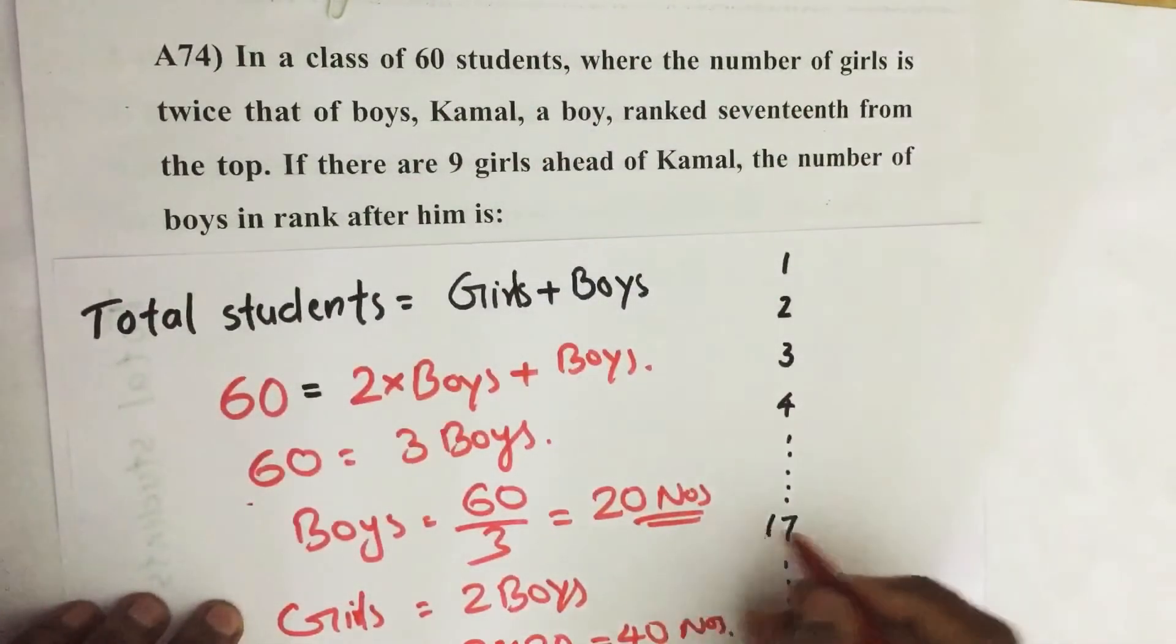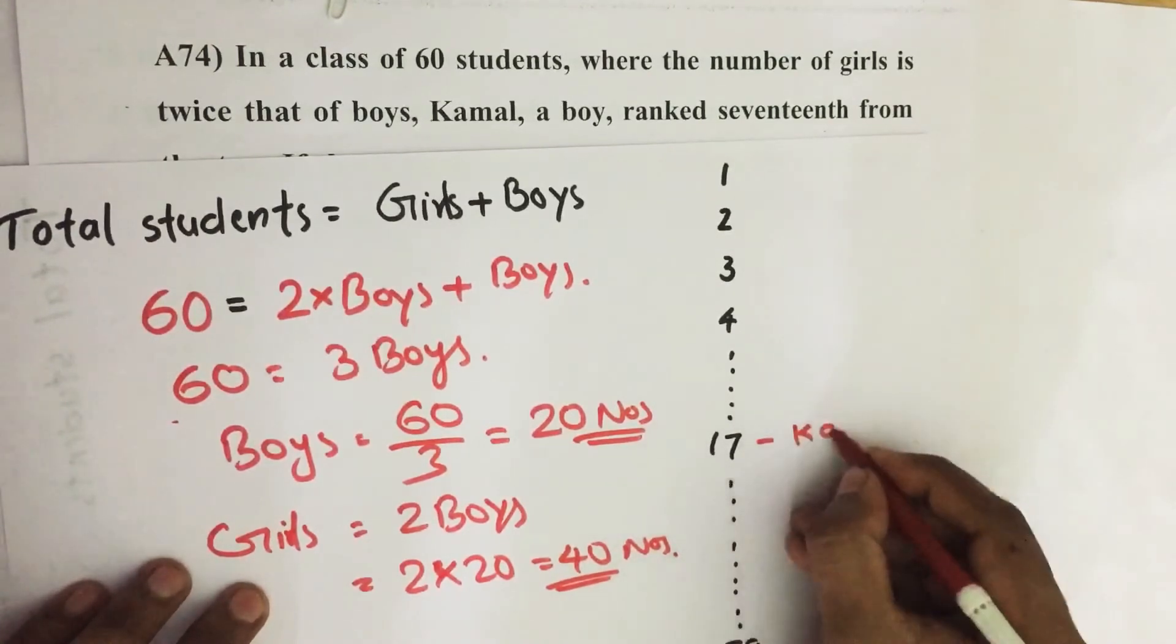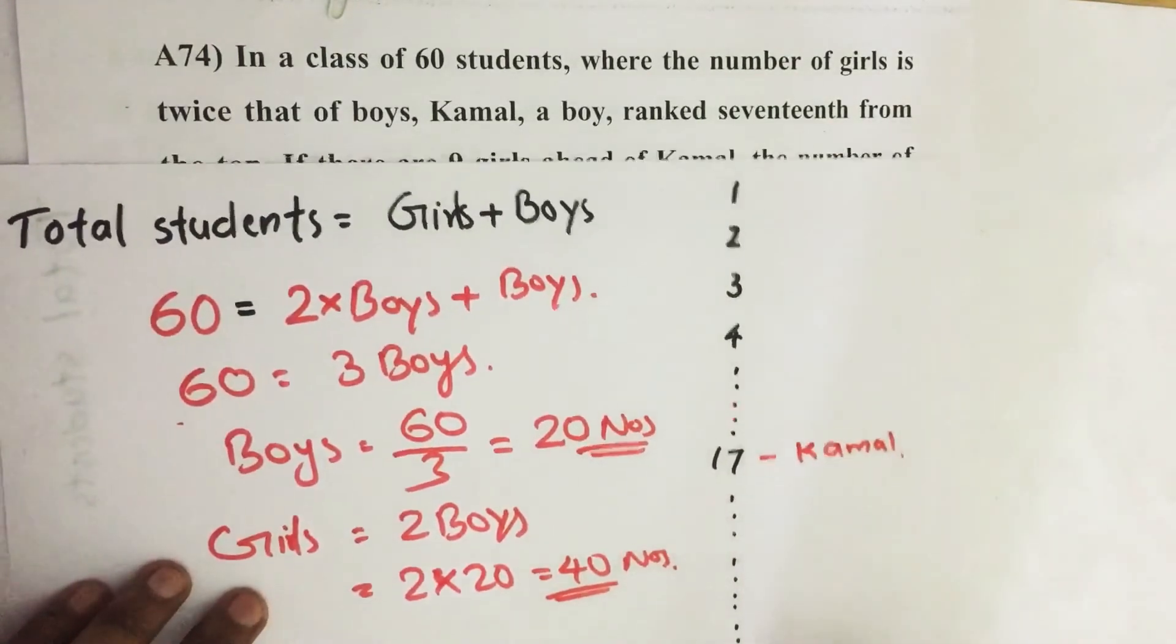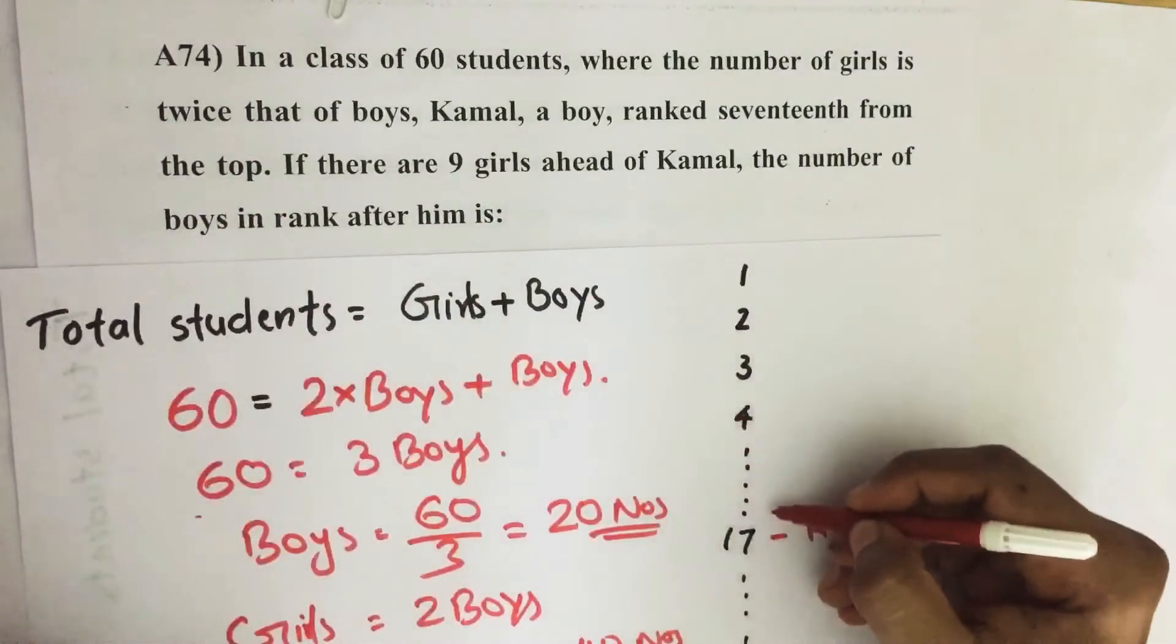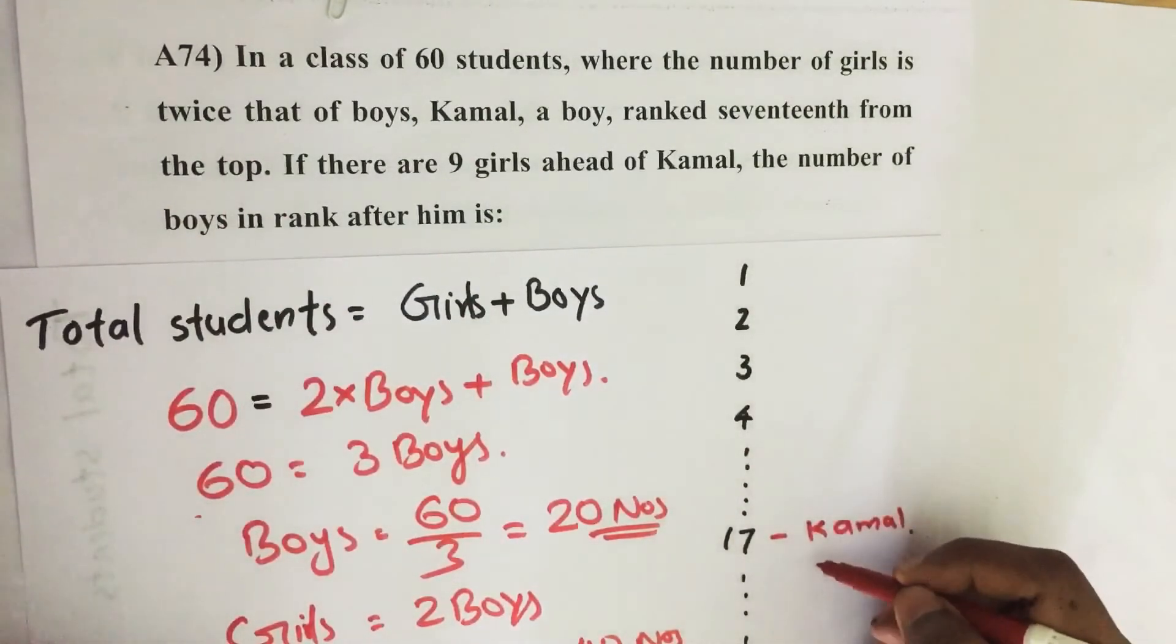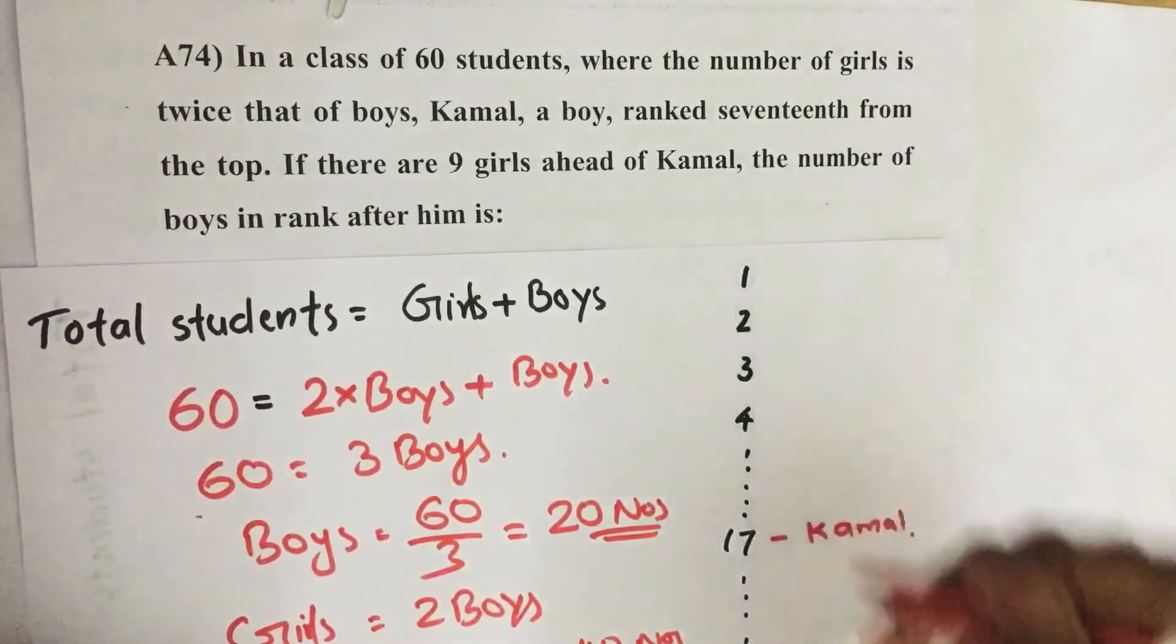Then these students are ranked, and Kamal is the 17th one. And then it is said that there are 9 girls above this 17th rank, above Kamal.